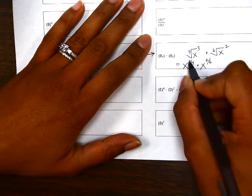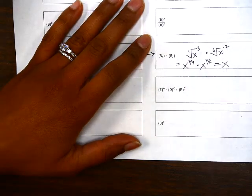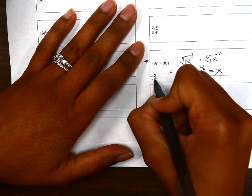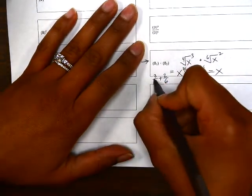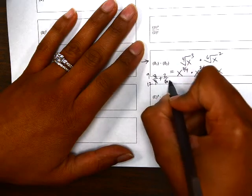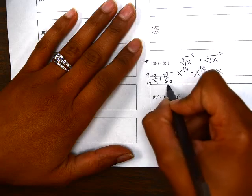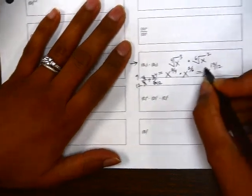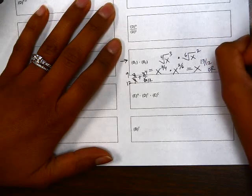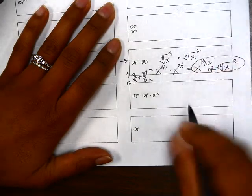Now we can take the two exponents and add them together to get our final simplified answer. So 3 fourths plus 2 sixths. Here a common denominator is 12. So this is 13 over 12 which is my final exponent. You can leave your answer in fractional exponent form or it's fine to also leave your answer in radical form. Either of these would be completely simplified.